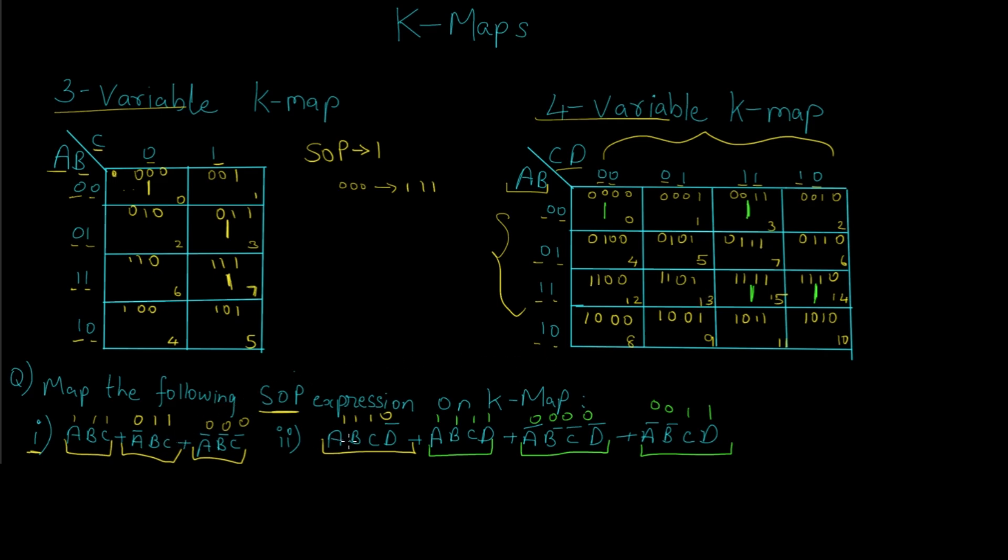Now notice that both these equations are standard SOPs. That is, every product term has all the three variables ABC for the 3-variable, and ABCD for the 4-variable. Whenever we map a Boolean expression to a K-map format, we first need to convert it into a standard POS or SOP format. Just keep that in mind—when we actually solve these problems, we will have to do that calculation as well.